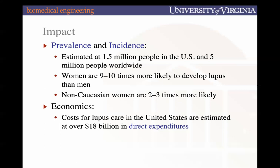In the U.S., current direct expenditures for lupus is $18 billion dollars. Women of color are two to three times more likely than Caucasian women to be affected and have the highest burden for autoimmune diseases. Direct expenditures refer to costs related directly to therapy and treatment; indirect expenditures are associated with loss of income and other consequences of the disease.